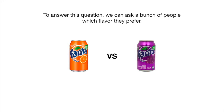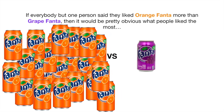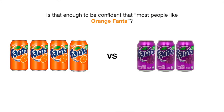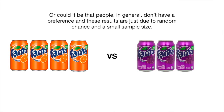To answer this question, we can ask a bunch of people which flavor they prefer. If everybody but one person said they liked orange Fanta more than grape Fanta, then it would be pretty obvious what people liked most. But what if four people say they like orange Fanta and three people say they like grape Fanta? Is that enough to be confident that most people like orange Fanta? Or could it be that people in general don't have a preference, and these results are just due to random chance and a small sample size?